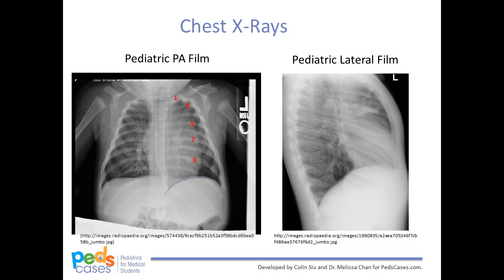The spinous process of the vertebral body should be equidistant from the medial ends of the clavicle. Additionally, ensure that you order 2 views when ordering any pediatric chest x-ray, such as a lateral view in addition to a PA view. Lastly, be aware that lines and tubes often appear on chest films. Though they will not be covered in this video, it is important to recognize what they are and not mistake them as pathological features.